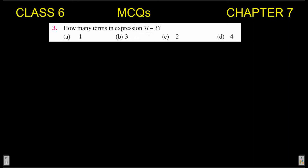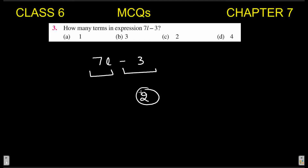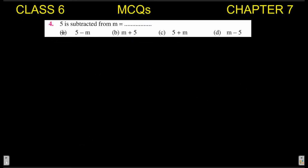Next MCQ: how many terms are in the expression 7l − 3? The first term is 7l and the second term is −3. So total terms are two. Two is in option C, so C is your answer.